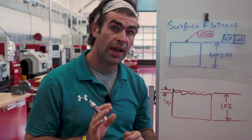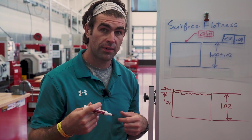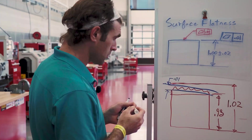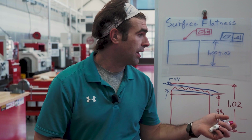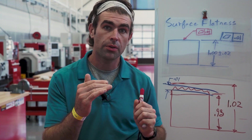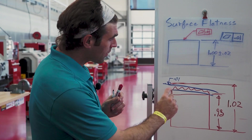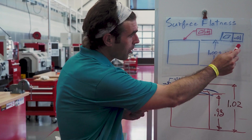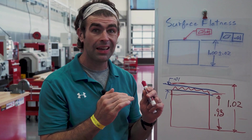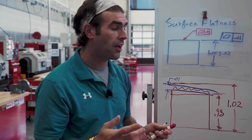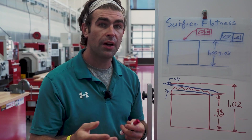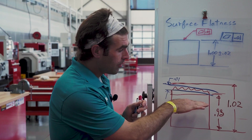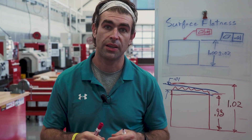The flatness tolerance will float anywhere within the size zone. If we have a situation where our size tolerance is much larger than our flatness tolerance, the flatness tolerance can float within the size tolerance. As long as the surface comes in between two parallel planes that are 10 thousandths apart, it can be anywhere within that size tolerance zone. With 40 thou of size tolerance, the surface could be at the bottom, top, or slanted — and still be flat.